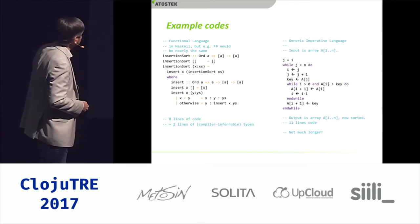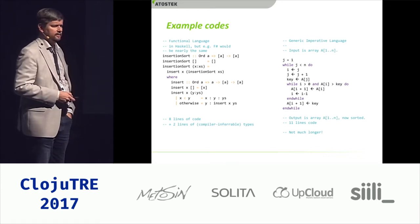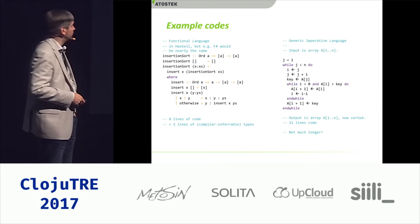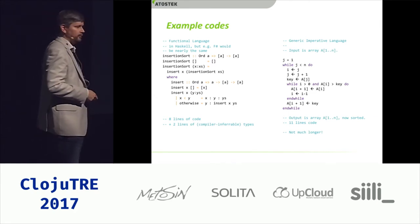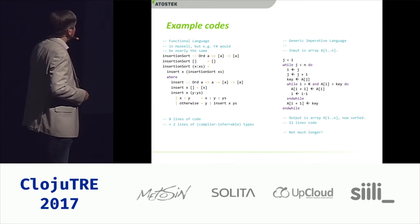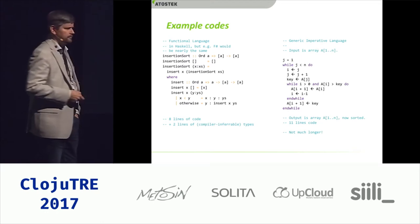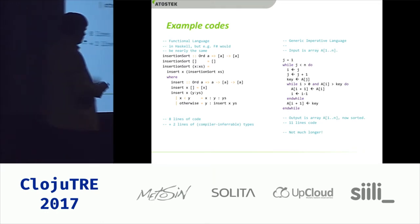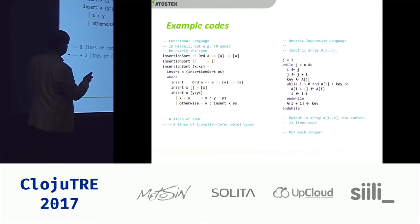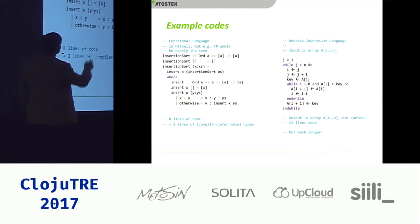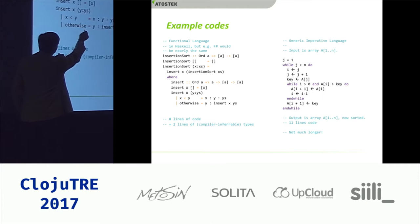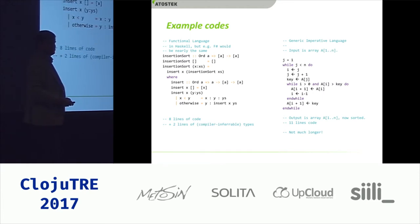I coded it. This left side is valid Haskell, or if you know any similar languages they should look about the same. There's the main function, insertion sort, and the helper function insert. It operates on a list of orderable items. If the list is empty, the result is empty. If the list is not empty, there's a head and tail, and we take the head and insert it into the tail, which is first sorted with insertion sort — nice recursion there.